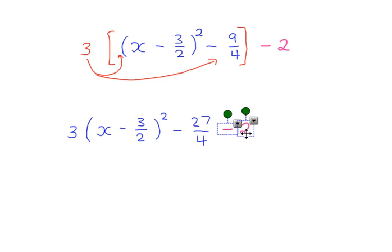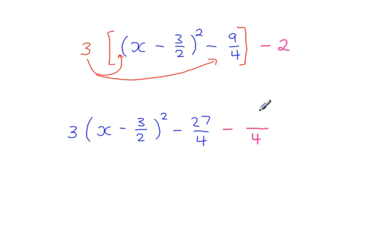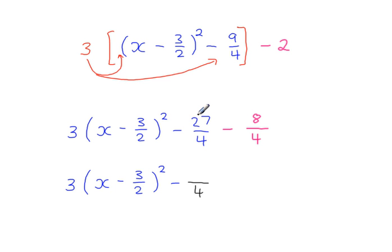Now, how do you simplify the constants when you have a fraction and a whole number? To do this, write the whole number as a fraction with denominator 4. What divided by 4 gives you 2? — 8 divided by 4 gives 2. So minus 2 and minus 8 over 4 are the same. Because we now have two fractions with the same denominator, we can simplify: minus 27 minus 8 gives minus 35 over 4.